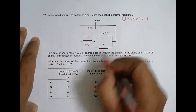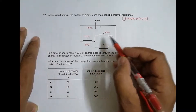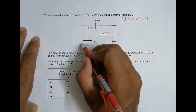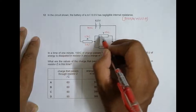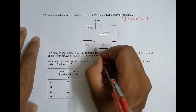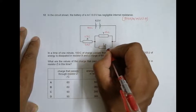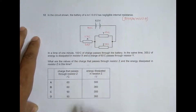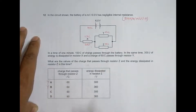One thing we have to remember is that charge is a conserved quantity. We have 150 mC of charge passing in one minute, and 60 mC passes through Y, so the remaining charge must go through Z. That gives us 150 minus 60 equals 90 mC. This means choices A and B are already disqualified.